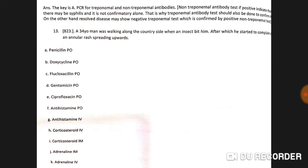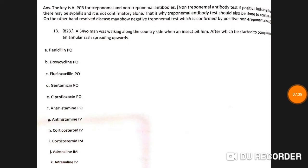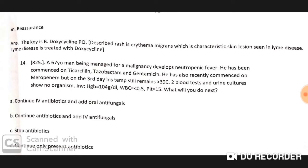A 34-year-old man was walking in the countryside when an insect bit him, after which he developed an annular rash spreading upward. Treatment is doxycycline orally. As previously discussed, this is a Lyme disease case.